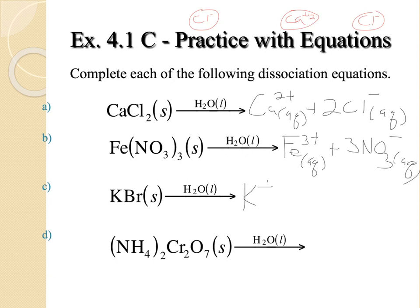KBr, we get one potassium. And we get one bromine. Those are both aqueous. And ammonium dichromate. We get two ammoniums, NH4+, plus one dichromate, Cr2O7 2-. Those are aqueous as well.